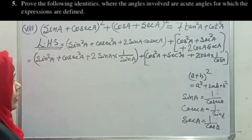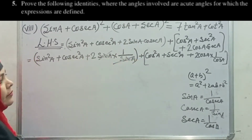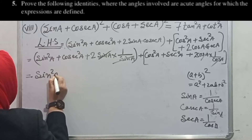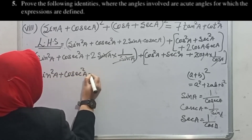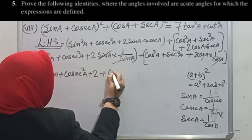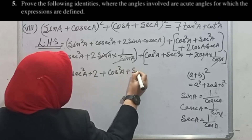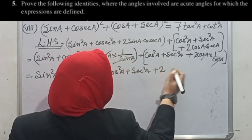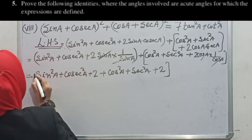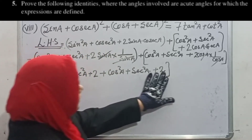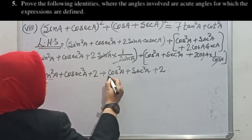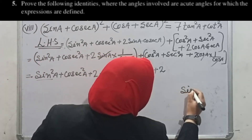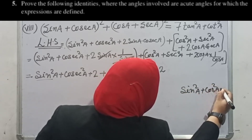Now watch carefully for the next step. We have sin²A + cos²A + 2 + cosec²A + sec²A + 2. You know that sin²A + cos²A = 1. So we use this identity: sin²A + cos²A = 1. Applying it, we replace sin²A + cos²A with 1. What is left is: 1 + cosec²A + sec²A + 2 + 2.